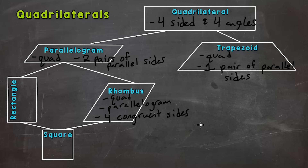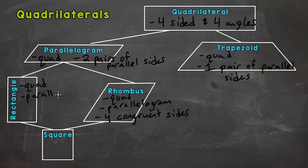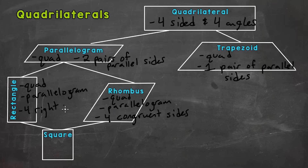You could also call it a quadrilateral — it is a quadrilateral — but the best name is rhombus. Now let's look at rectangle. A rectangle is a quadrilateral with four sides and four angles; it is a parallelogram with two pairs of parallel sides. What makes it more specific is that it has to have four right angles — four 90-degree angles.